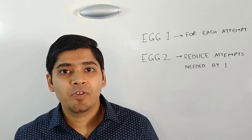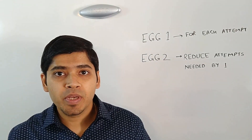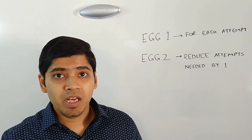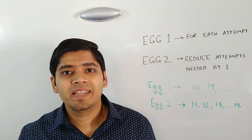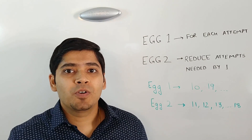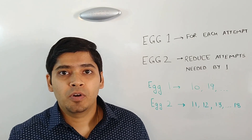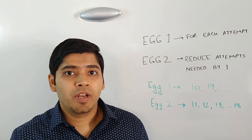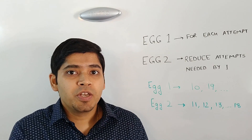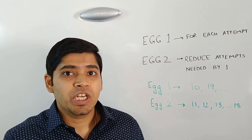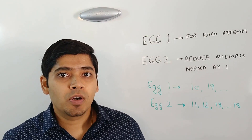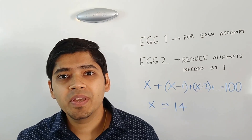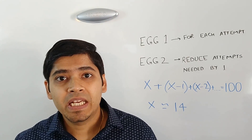Since our aim is to reduce worst-case attempts, for each attempt consumed by egg 1, we need to reduce the number of attempts needed by egg 2 by 1. For example, in the 10-floors-at-a-time approach, we attempted egg 1 at the 10th floor — suppose it did not break. Then instead of going to the 20th floor next, we try the 19th floor. This reduces the range needed by egg 2 by 1 at each step. If egg 1 breaks at the 19th floor, egg 2 only needs to try floors 11 to 18 instead of 11 to 19. By doing this, we minimize the attempts needed in the worst-case scenario.